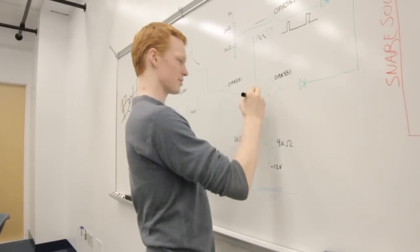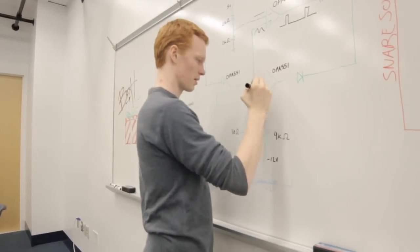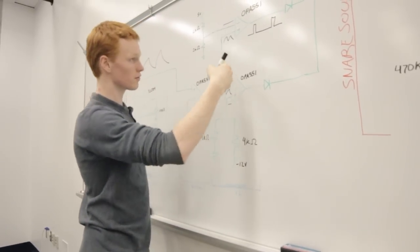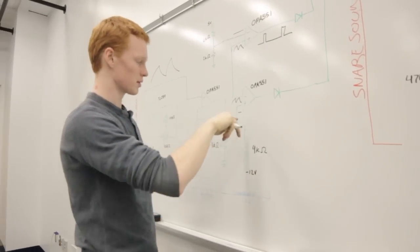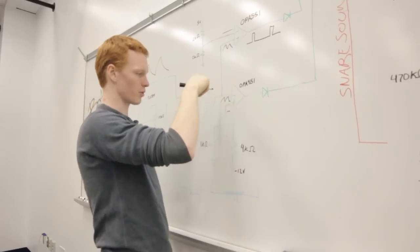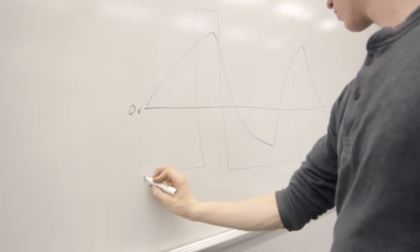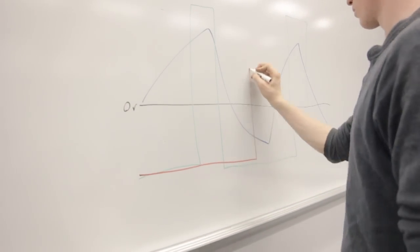The other comparator takes that same shark wave, and compares it to a negative two-and-a-half-volt signal. Now this one's flipped around from the other one, so that when the shark wave dips below two-and-a-half volts, we get a rail high in the comparator. So it looks like this.